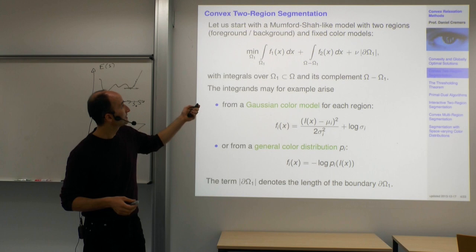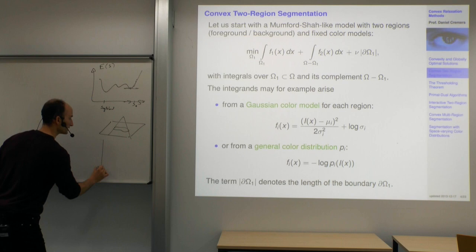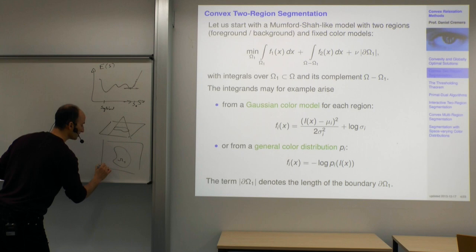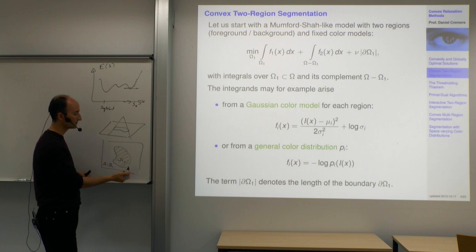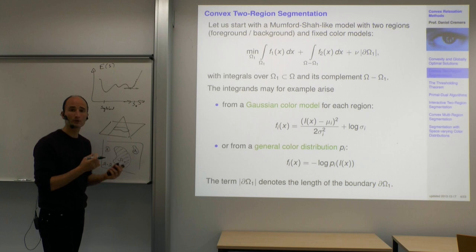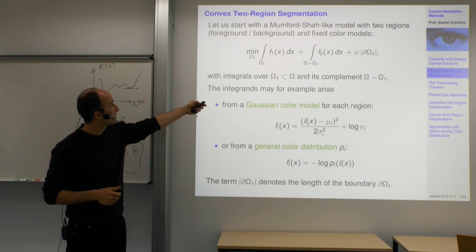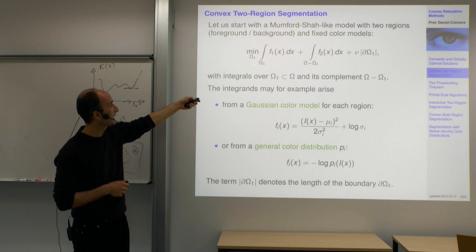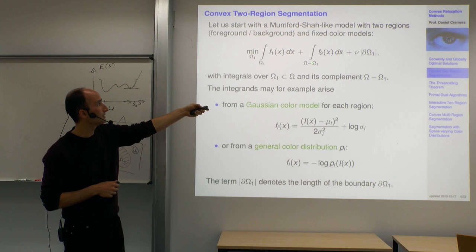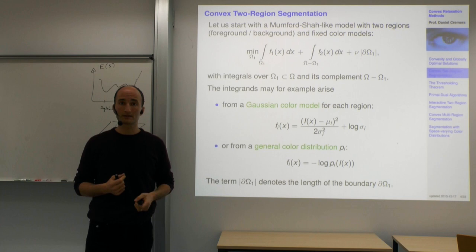This is the piecewise constant Mumford-Shah model for two regions. We consider an image plane with some region Ω₁ and a complement background region Ω \ Ω₁, where Ω₁ need not be connected — it could have multiple components, any foreground-background separation. The cost function has a data term F1 aggregated over Ω₁, F2 aggregated over the complement region, and a term that penalizes the length of the boundary separating Ω₁ and its complement.